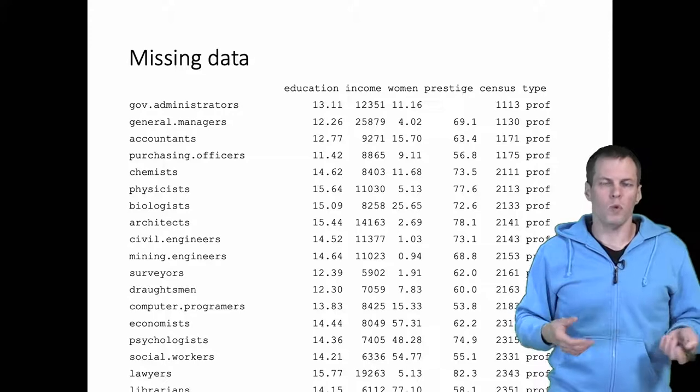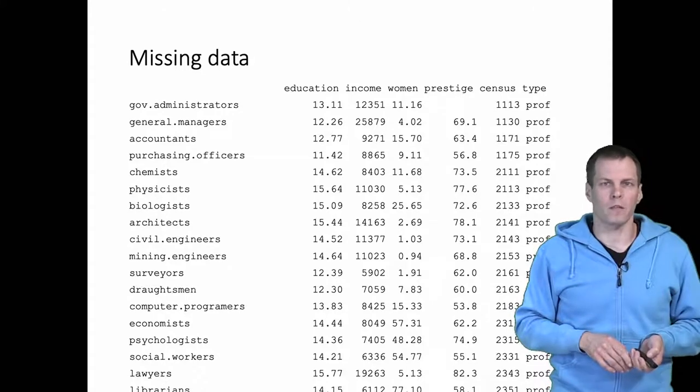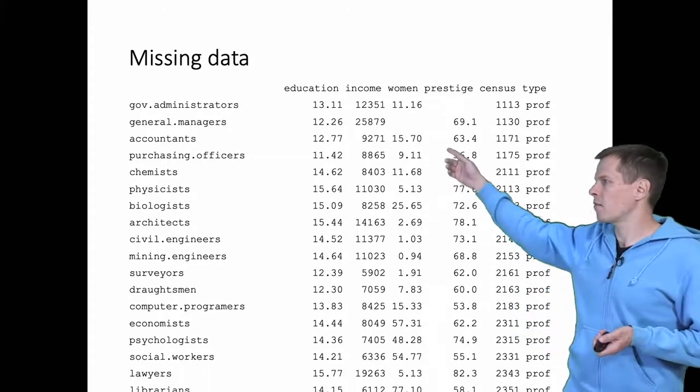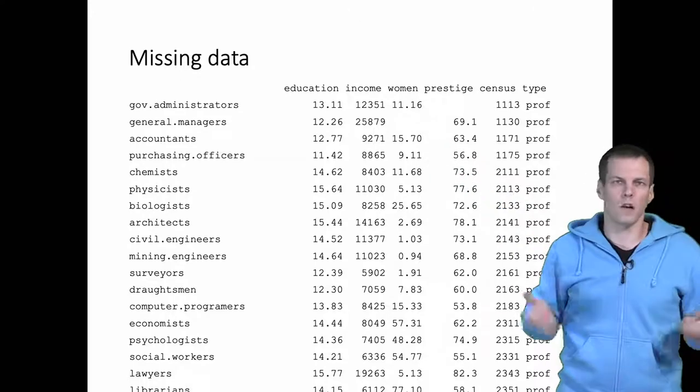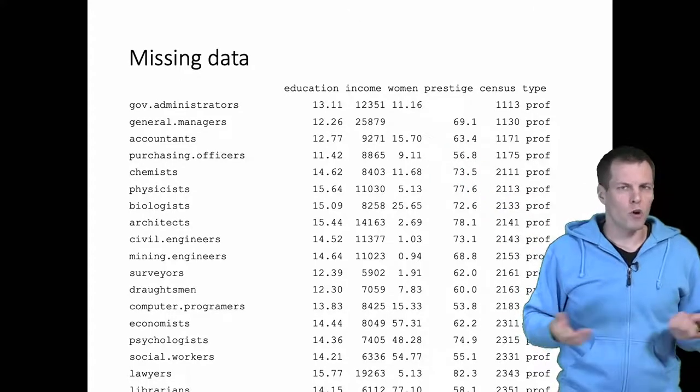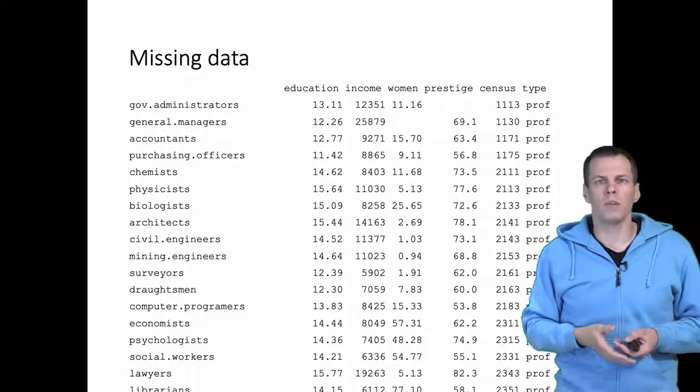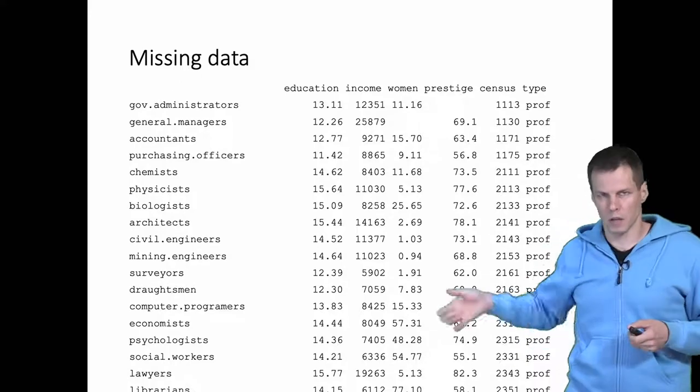What if that's not the only missing value? What if we have missingness also here, with general managers and the share of women is missing? Two observations out of a bit more than 100, probably not a big deal. We can just run a regression analysis.